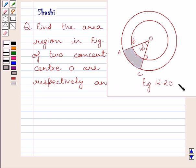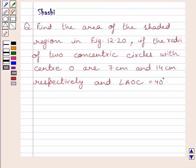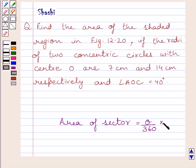This is the given figure 12.20. First of all, let us understand that area of sector is equal to theta upon 360, multiplied by pi R squared. Here, theta is the angle made by the sector at the center of the circle and R is the radius of the circle. This is the key idea to solve the given question.